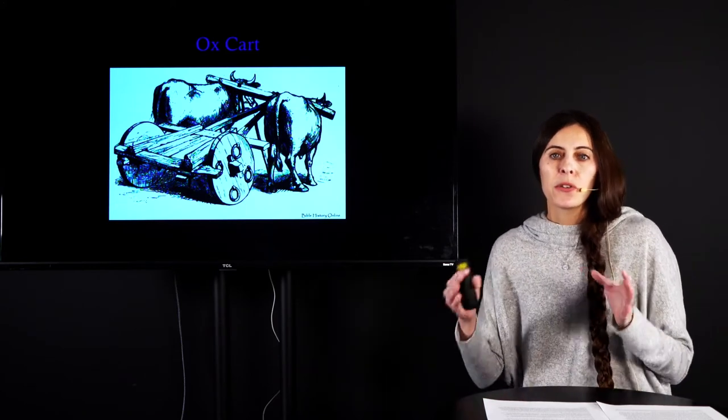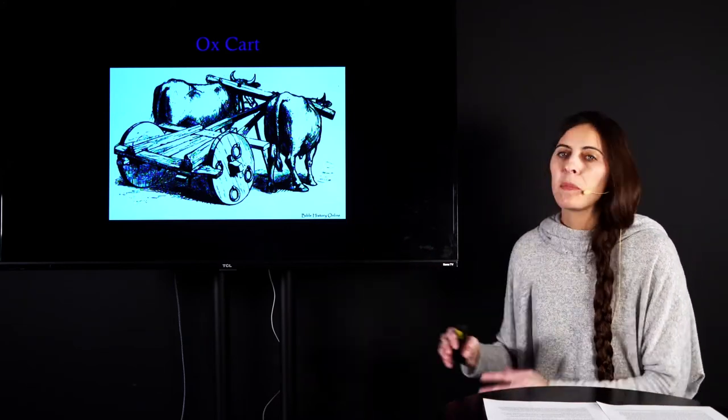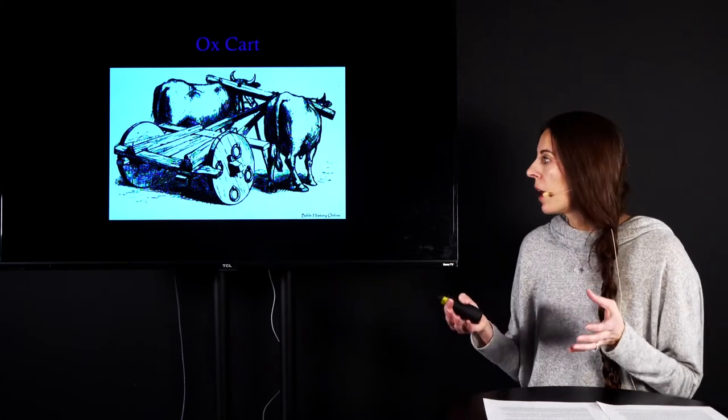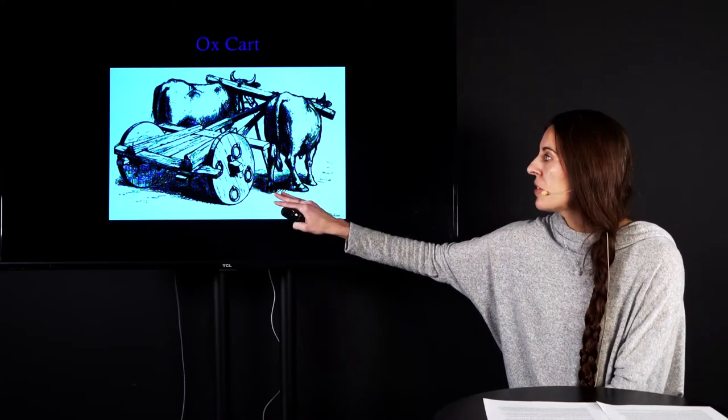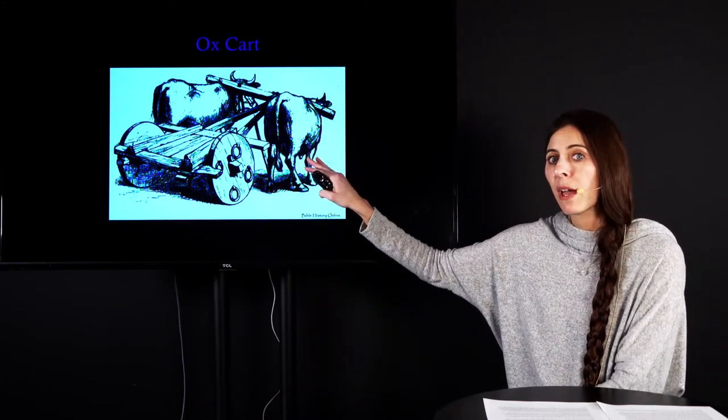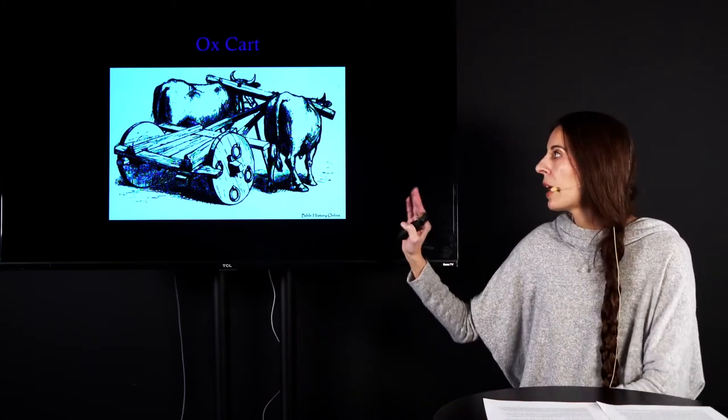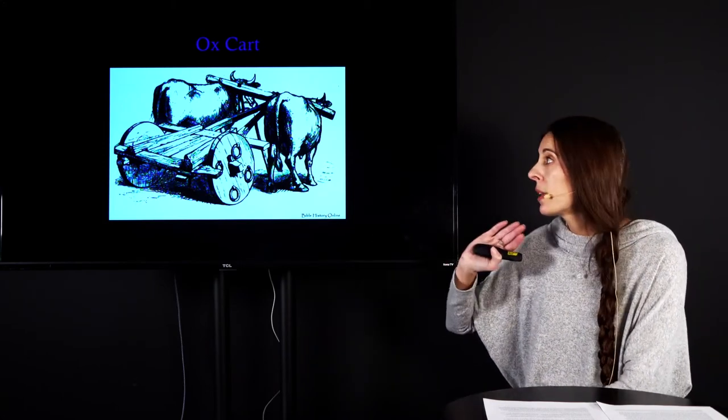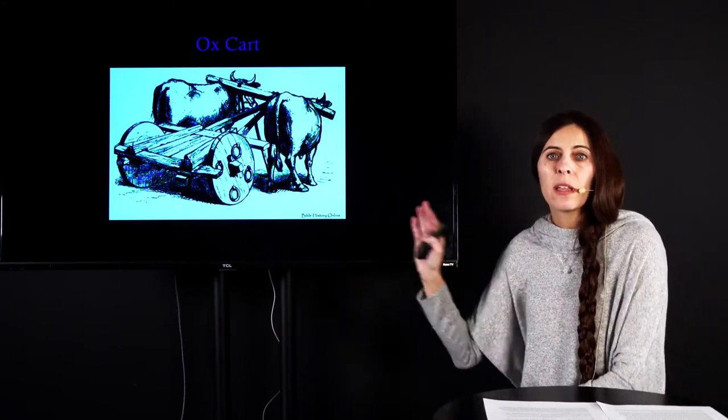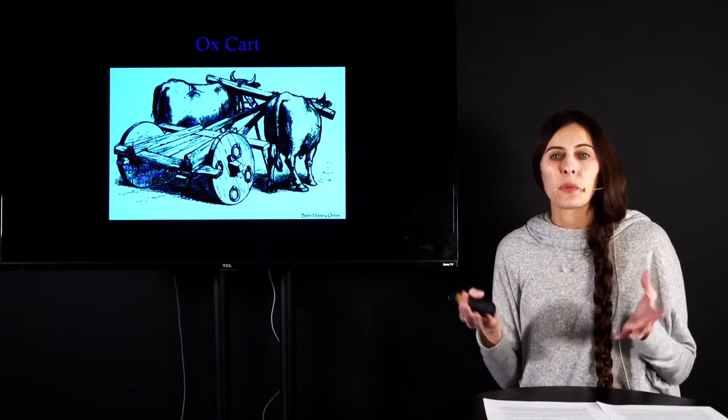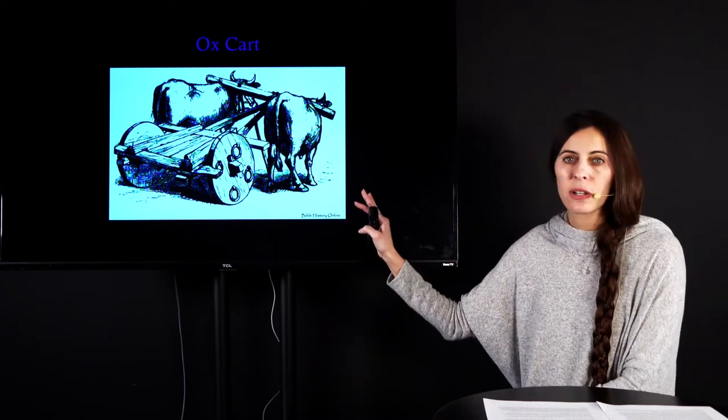Once the Philistines get it in their borders, they are realizing that they don't want it anymore because it is wreaking havoc on their country. Wherever the Ark goes, plague breaks out. Tumors are growing on people. And so they devise a plan. They get a cart and they place the Ark of the Lord or Ark of God, Ark of the Covenant, those are all different names for it. They place it on this ox cart and they hitch the ox cart up to two oxen or two female cows who had just given birth.